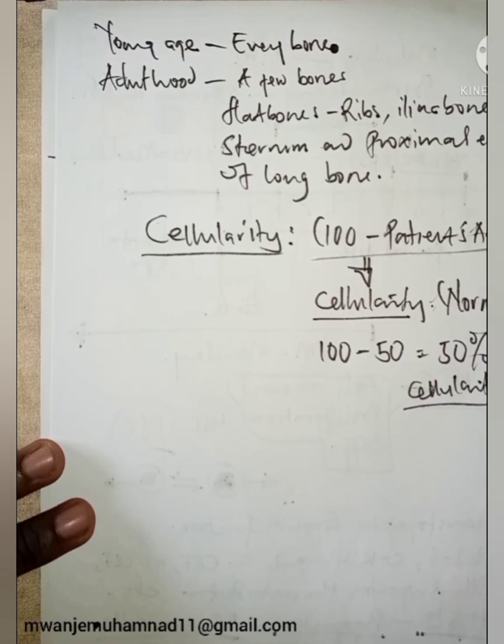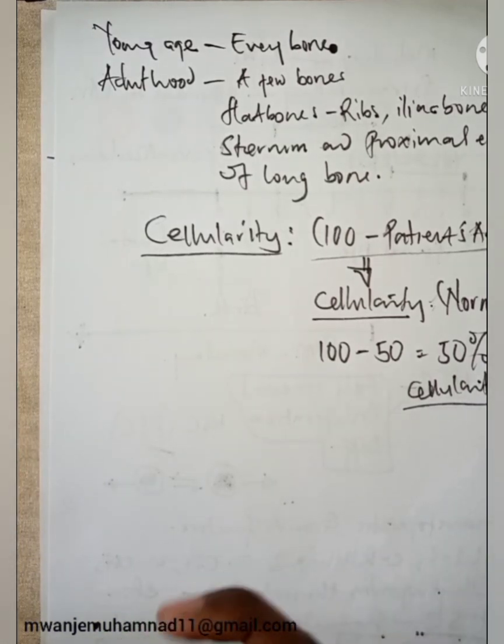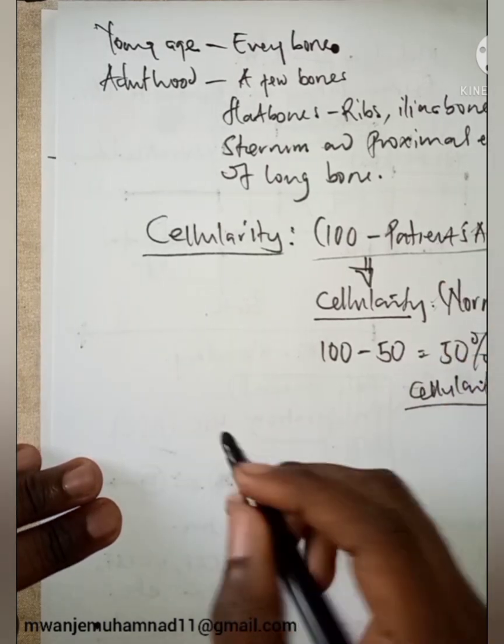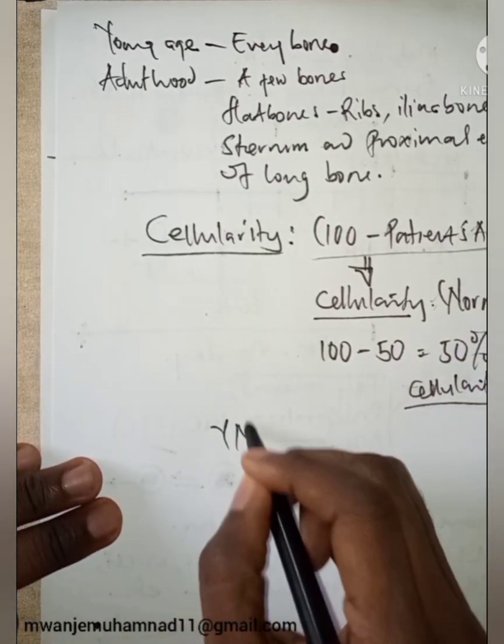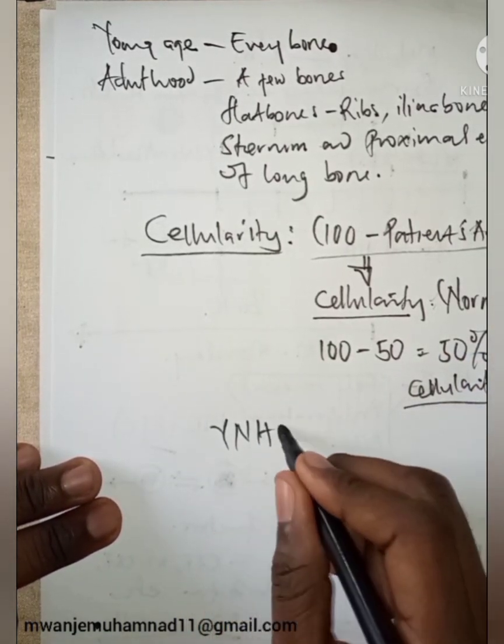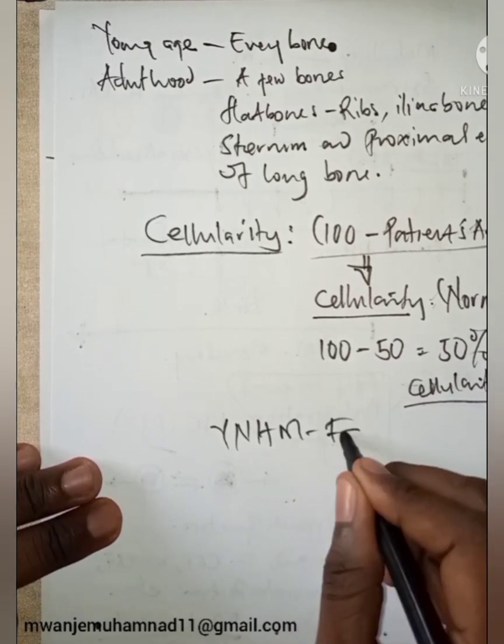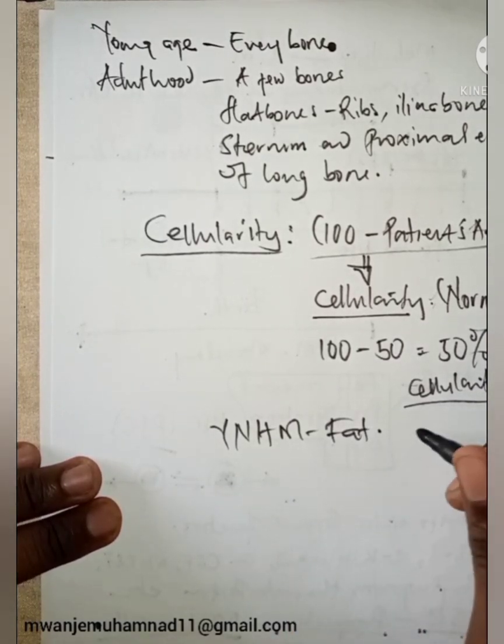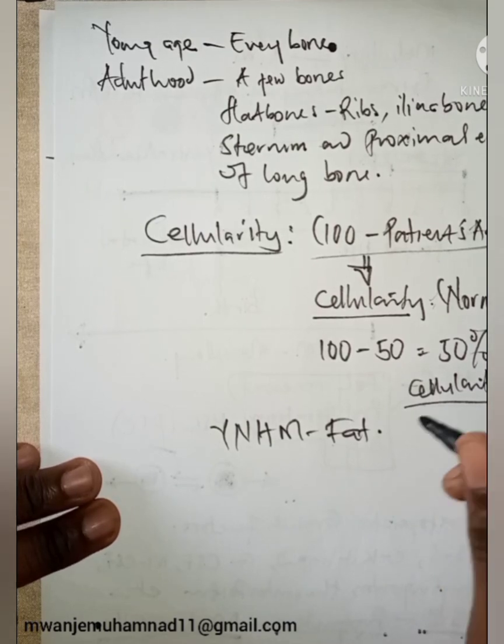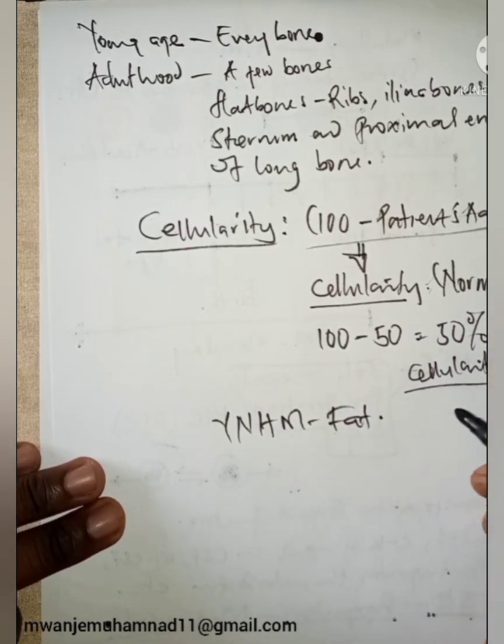Yes, this is where the formula comes from, because as one grows, this fat, the yellow non-hematopoietic marrow is fat. And cellularity is a comparison between the cellular components you see and the fat tissue you're seeing in the bone marrow.